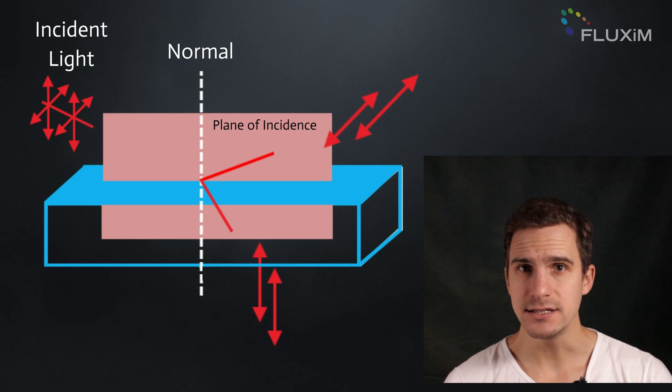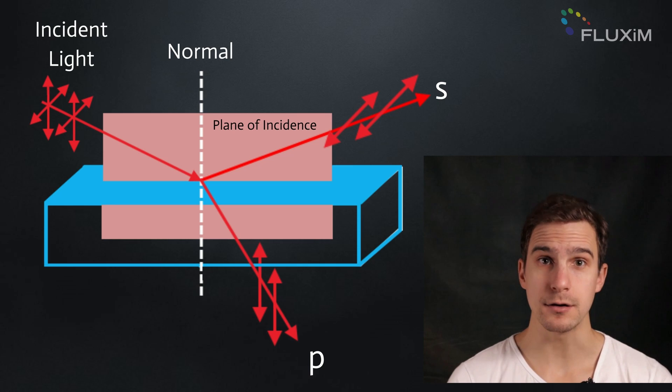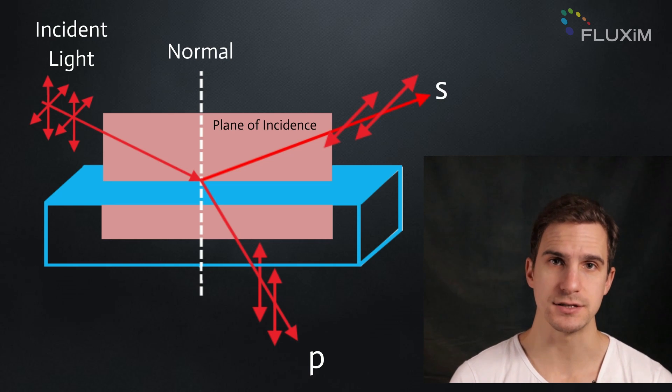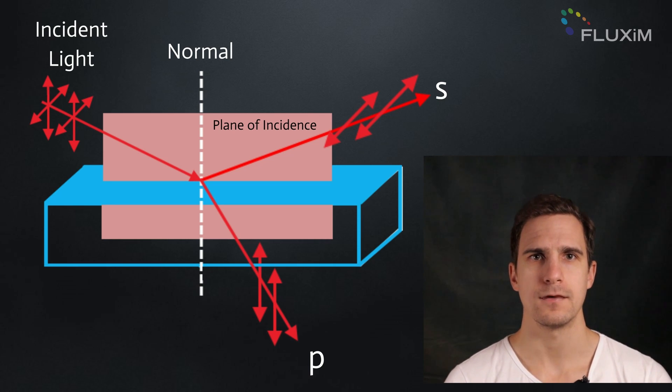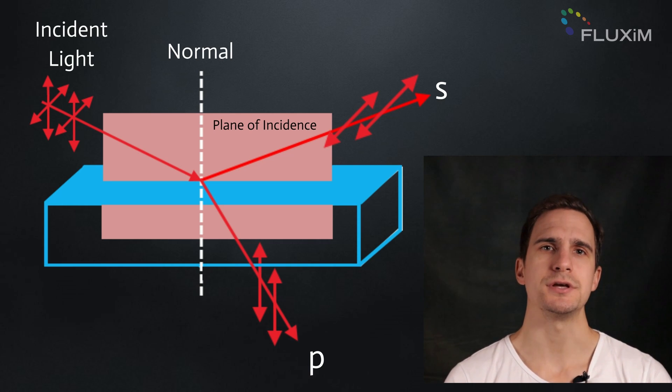The emitted light is s- or p-polarized, depending on if its electric field is perpendicular or horizontal to the plane of incidence respectively. When the molecules are horizontally oriented, the p-polarized emission is strongest and perpendicular to the substrate.